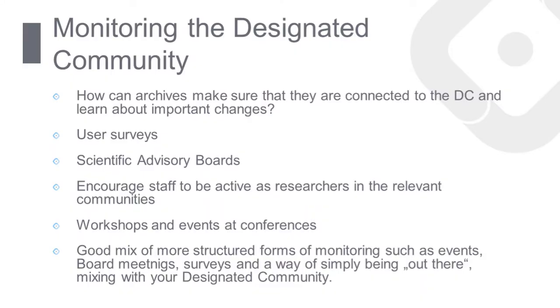So how can archives make sure that they stay connected to their designated community and are aware of important changes? User surveys and help desks are a good way of monitoring the designated community. Archives might also have advisory boards, and they can encourage staff to be active as researchers in the relevant communities. Workshops and events at conferences are another way of staying in touch. In our experience, what archives should aim for is a good mix of more structured forms of monitoring — such as events, board meetings, and surveys — and, on the other hand, simply being out there and mixing with the designated community.